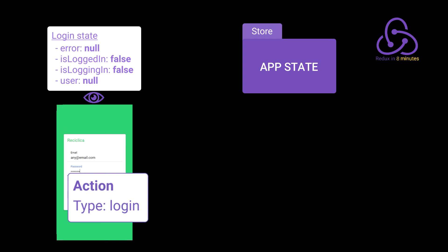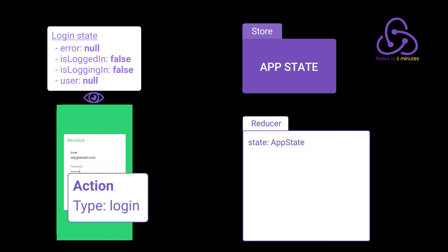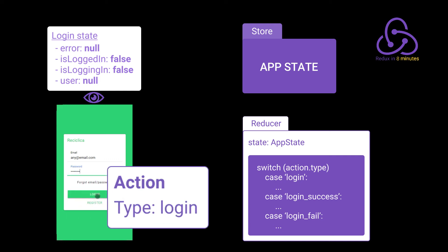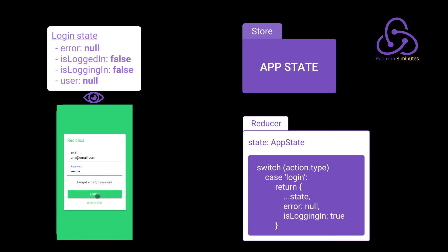This action will go through something called a reducer. A reducer is a function that has access to the current state of the store and knows how to update the store. The store doesn't update itself — it's the reducer that is responsible for this. The reducer has something like a switch-case statement that, based on the type of the action received, will execute some instructions and return the new state of the store. So for our 'logging' action, the reducer finds the correct case, and returns the current state with the 'is logging' field changed to true.